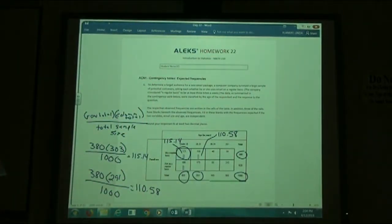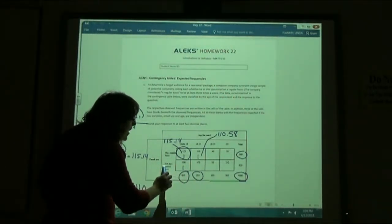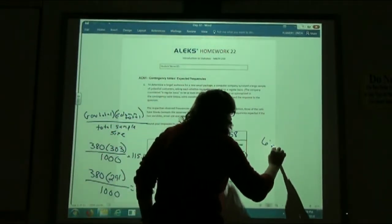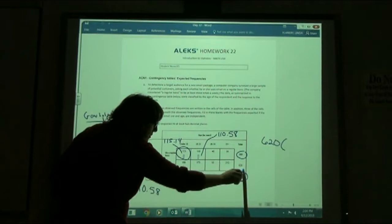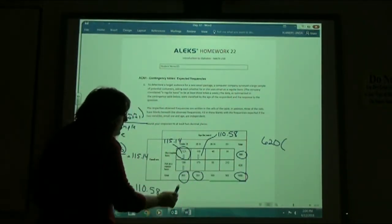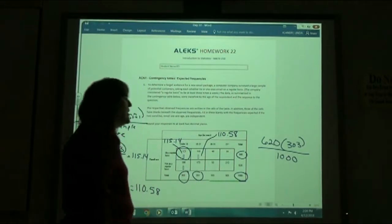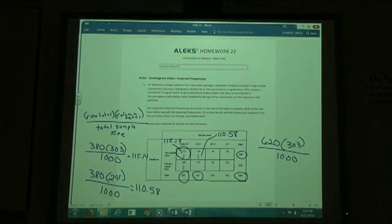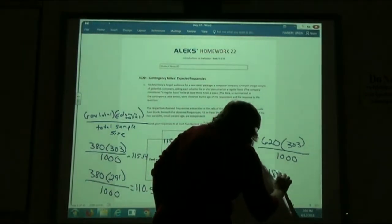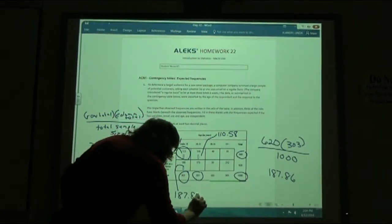And then they're going to have you do a third one. On the third one, now I'm down here for not on a regular basis, I have my row total is 620. Row total is 620. My column total, I'm still in the under 18 column, so I have my 303. And I'm dividing it by my total sample size, which is the thousand on all of these. So if you punch in 620 times 303 divided by a thousand, you should come up with 187.86. So this box right here, 187.86.